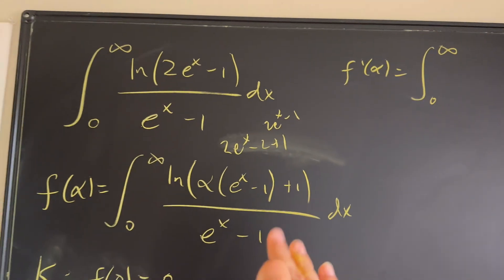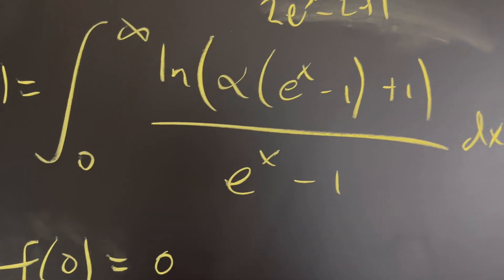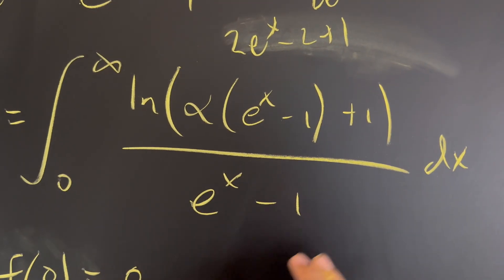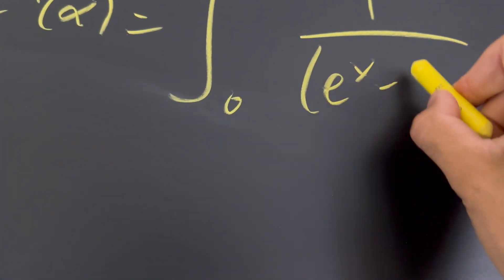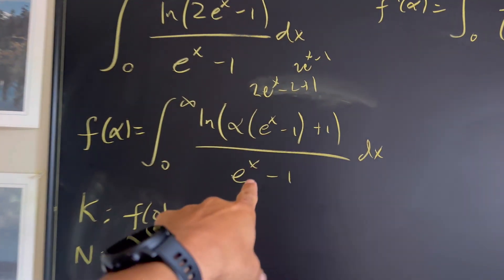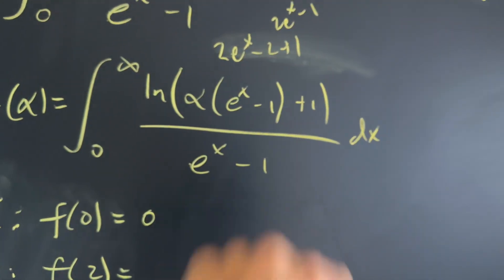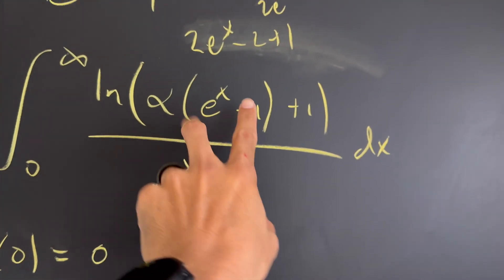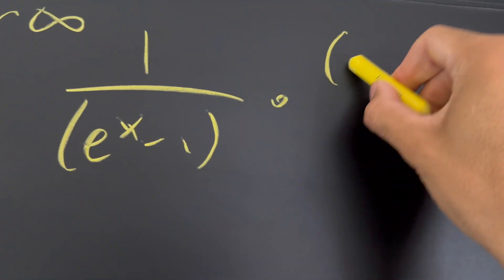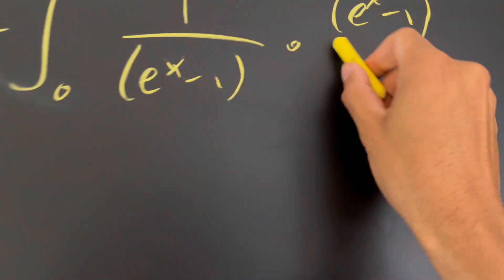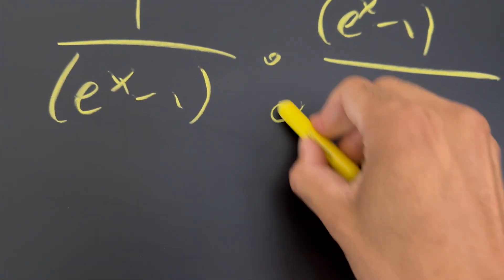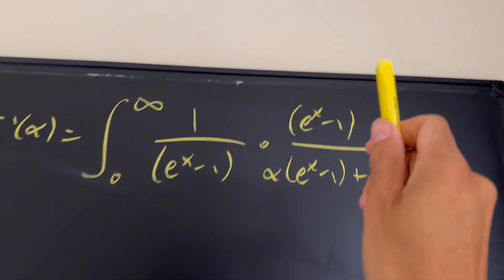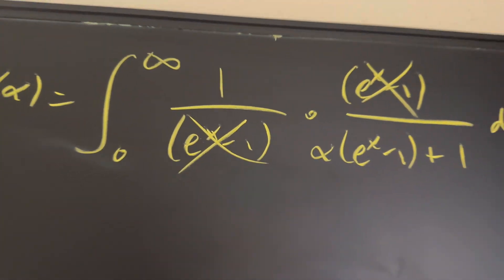So f'(α) becomes the integral from zero to infinity. We take the derivative of the natural log: the derivative of the inside (which is α·e^x minus one) is e^x minus one, and the derivative of one is zero, over the inside value α·e^x minus one plus one, with respect to x. The e^x minus one on the top and bottom cancel out, giving us a nicer integral.